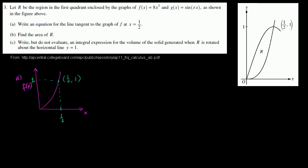We need to find the equation for the tangent line, which will look something like that. To figure out its equation, we just figure out its slope, and then we know a point that it's on. We could use point-slope or slope-intercept form. The slope of the tangent line is going to be f prime of one half — the derivative evaluated at one half gives us the slope of that line.